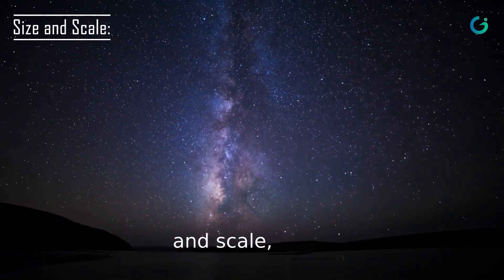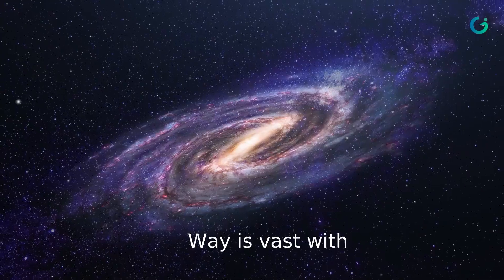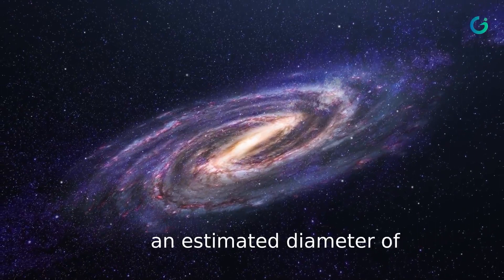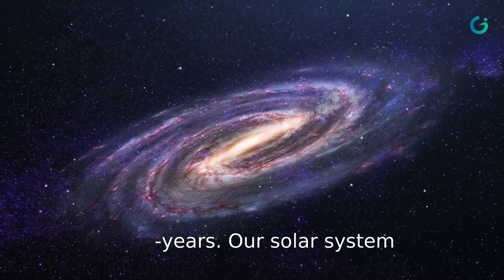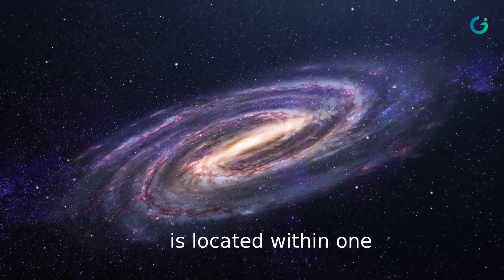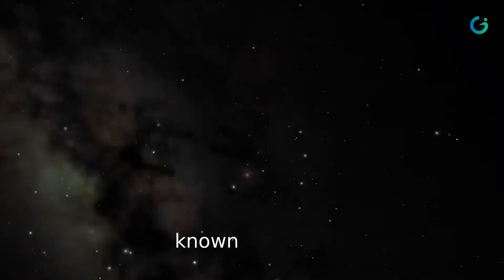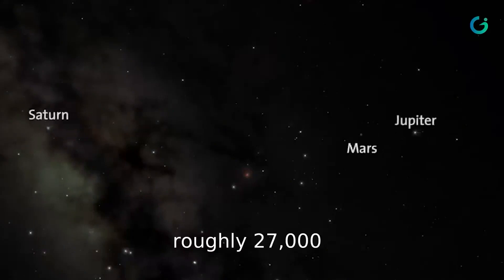The Milky Way is vast, with an estimated diameter of about 100,000 light-years. Our solar system is located within one of the spiral arms, known as the Orion Arm or Local Spur, roughly 27,000 light-years from the galactic center.